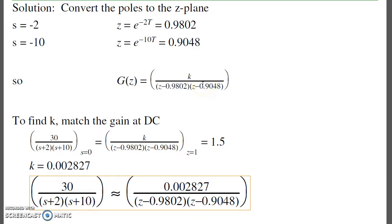To find k, match the gain at one frequency. Typically, match the gain at DC. At DC, G(s) has a gain of 1.5. Pick k so that at DC, G(z) also has a gain of 1.5. That gives k = 0.002827. So here's my filter in the z-plane. This small number is very typical of discrete-time filters. We often have a very small number, which means in one sample (10 milliseconds), the output doesn't change by very much.